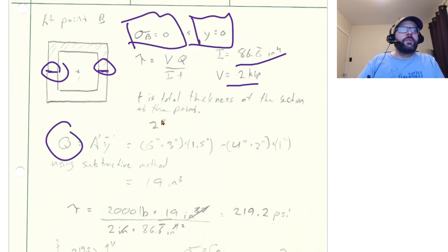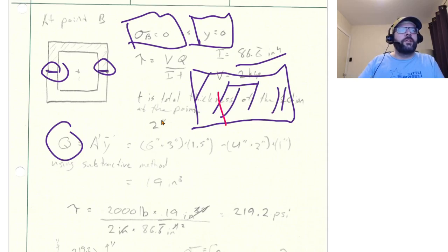Our Q, I used the subtractive method, so basically I was looking at the Q for this entire thing here and then I subtracted the Q for the space in the middle. So it's 6 inches times 3 inches is the area and then its Y bar overall would be 1.5 inches, and then for the gap in the middle 4 inches by 2 inches is this area and its centroid was at 1 inch. So that gives us a Q of 19 inches to the third.